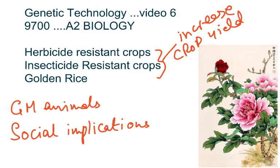This was the last video on the chapter on genetic technology. In this video we discussed herbicide resistant crops, insecticide resistant crops, golden rice, genetically modified animals, and the social implications of using genetically modified organisms in food production. This completes nearly all the videos on the A2 Biology syllabus — best of luck to you all.